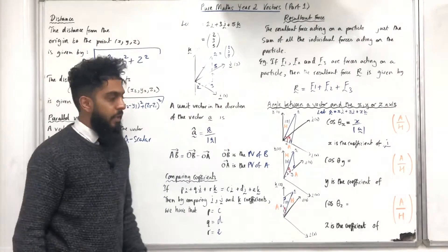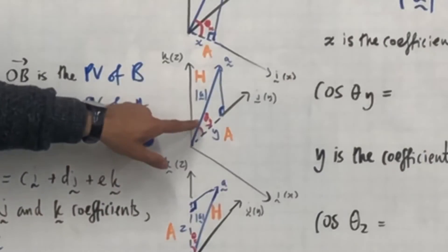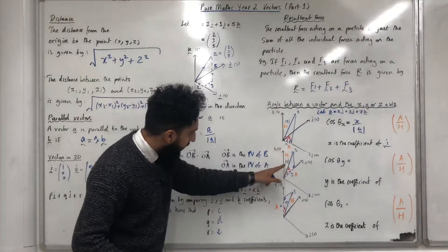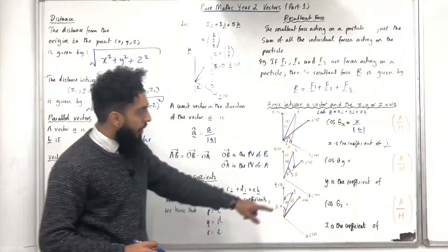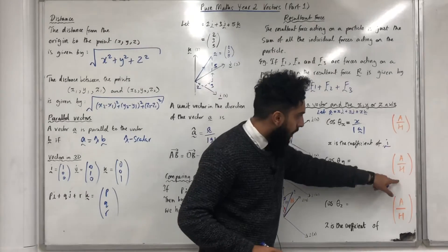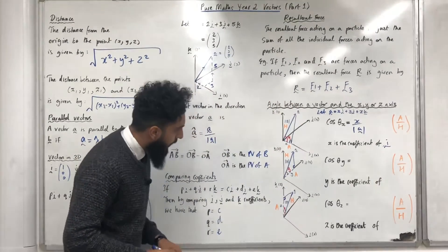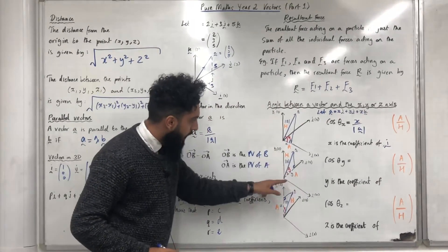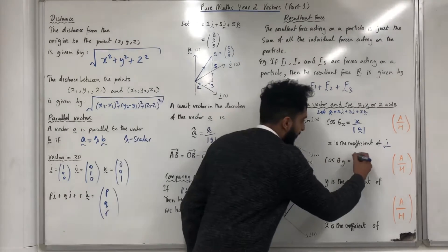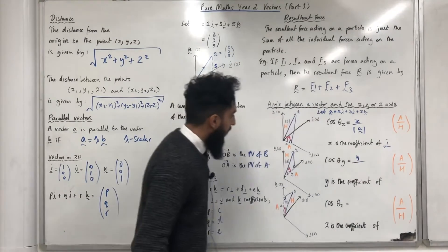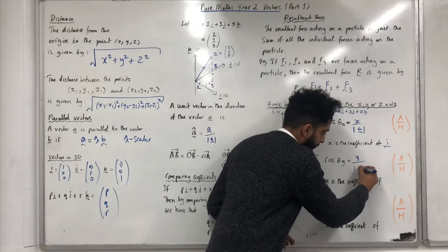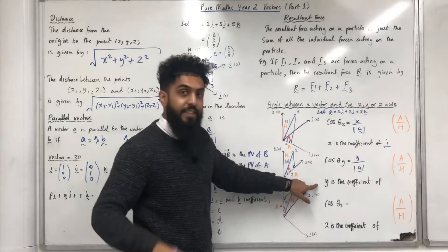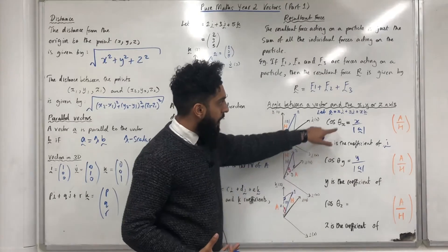Moving on to working out theta y, the angle between the vector a and the y-axis. I can work out cos theta y by using adjacent over hypotenuse. So the adjacent in this particular case will just be y. So we have y over hypotenuse, which is the magnitude of a. y is the coefficient of the vector j.